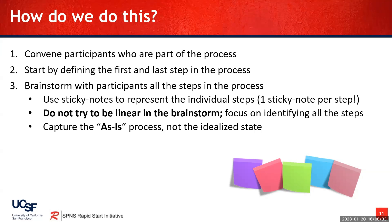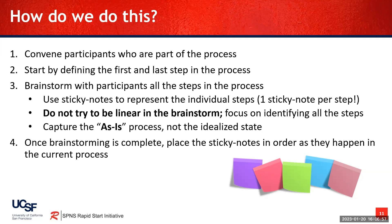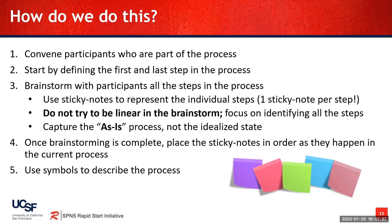Also when making a process map, it's very good to begin with your as-is process, describing how things currently exist in the organization or the agency. Beginning with an idealized state may lead you to think that there are steps in your process that could be holding you back or not contributing to positive outcomes that might be missed. So you always want to begin with how your process exists as-is. Once your brainstorm is complete, then you want to take your sticky notes and put them in the order as they happen in the current process. Once your sticky notes are aligned, you can then transfer your sticky notes to a document using the symbols to describe the process.